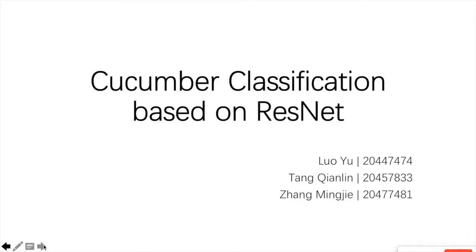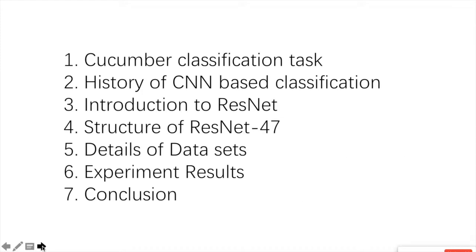Hello, my name is Luo Yu, and this is the presentation from me and my team members Tang Qianlin as well as Zhang Mingjie. Our team project is to use ResNet to do the cucumber classification. The presentation includes seven parts. I will talk about the first three parts and Mingjie will be responsible for the rest.